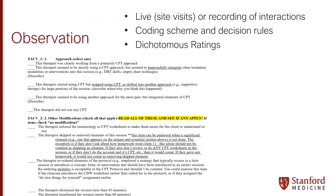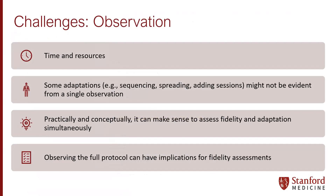Another way to assess is through observation, either through live site visits or watching or listening to recordings of interactions. We've developed a coding scheme and decision rules largely for content-level adaptations in a yes/no format for whether or not something occurred. Of course, observation requires time and resources, and some things you might not notice in a single observation — for example, if people change the sequence of the intervention, spread it across multiple sessions, or add sessions. Watching the full protocol can tell you both whether the entire protocol was delivered and what kinds of adaptations occurred, capturing detail like whether something happened later or didn't happen at all.